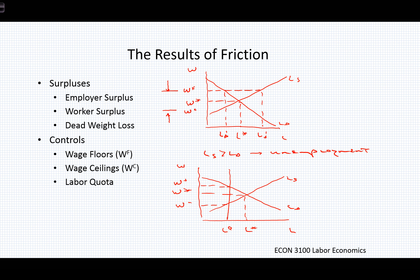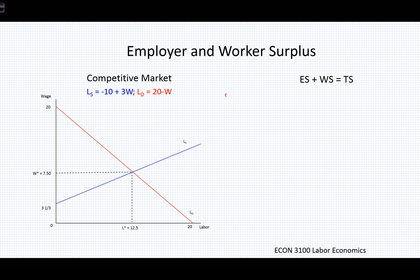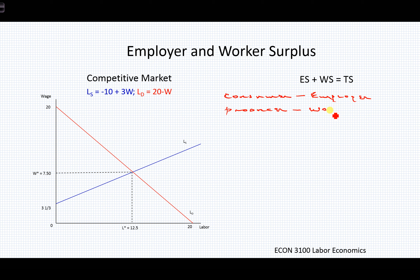Let's think about how we measure and think about these surpluses. In microeconomics, we think about consumer surplus and producer surplus. In the labor market, the consumer of labor is the firm or employer, and the producer of labor is the worker or household. So we use the terms employer surplus (ES) and worker surplus (WS), and the sum of all surpluses in an equilibrating market — one without friction — gives us total surplus: ES plus WS equals total surplus.